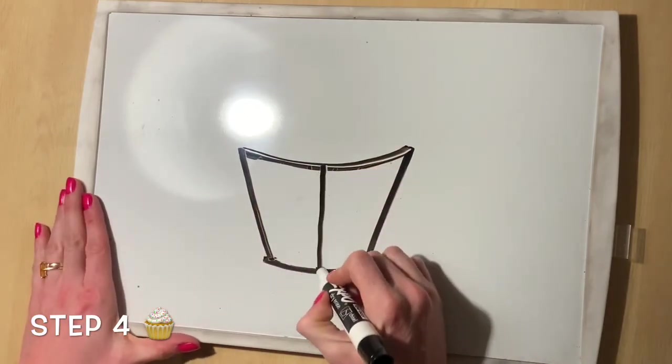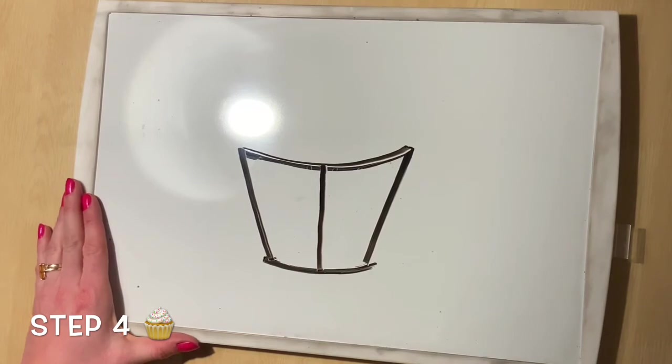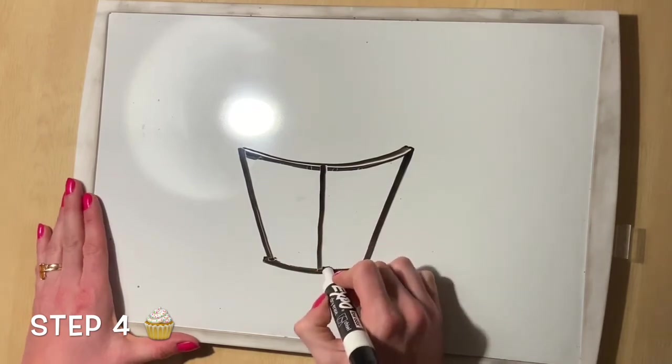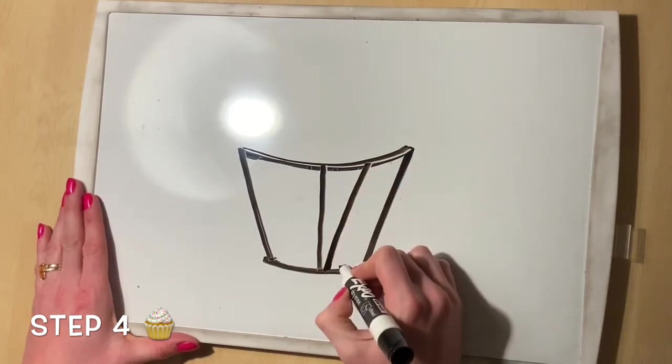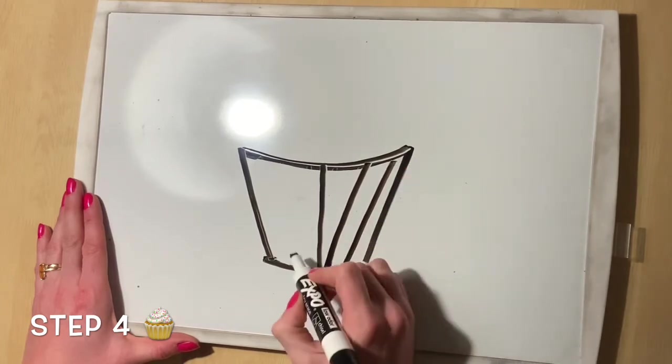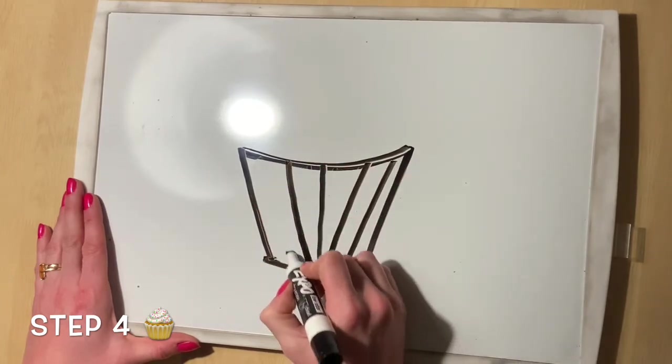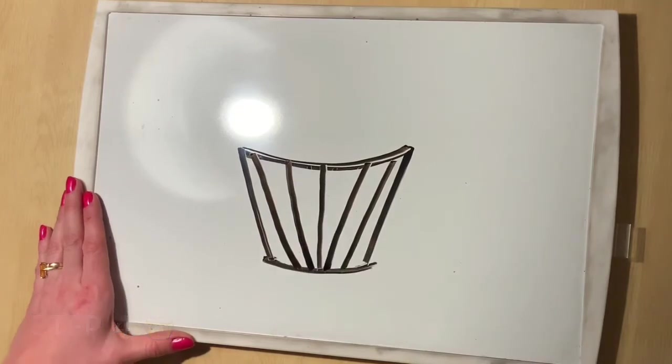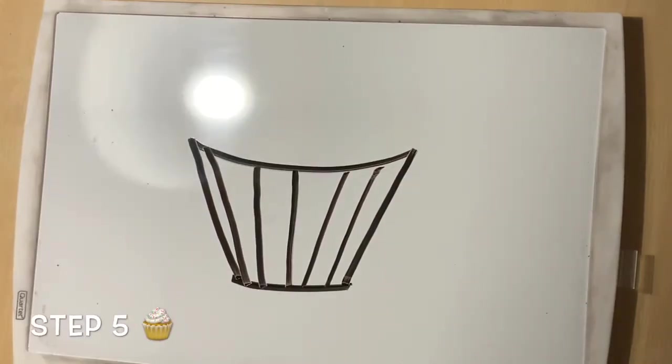After that, we need to add some more lines inside of the cupcake holder. One in the middle goes straight up and down. Two lines on either side are at an angle, so it looks like it's fanning out.